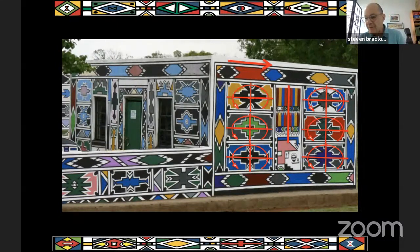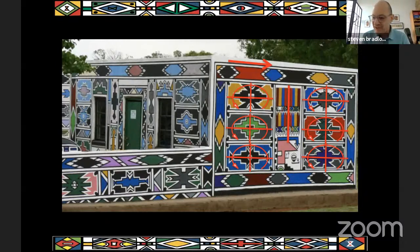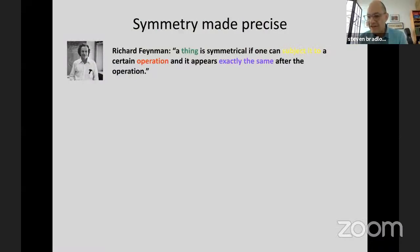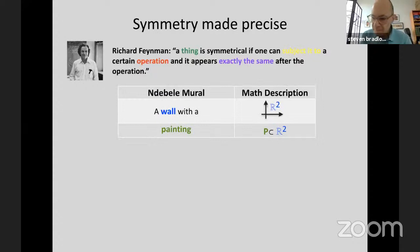It's clear that the Ndebele mural artists have a sophisticated understanding of certain principles of order that we would colloquially call symmetry, and they're very adept at using it to create — in Herman Weyl's words — order, beauty, and perfection. But how do we describe these features more precisely? One way of formulating the fundamental insight is nicely expressed by physicist Richard Feynman, who said that a thing is symmetrical if one can subject it to a certain operation and it appears exactly the same after the operation.